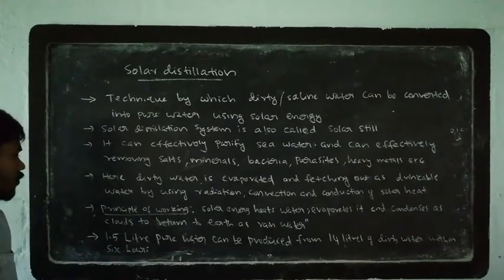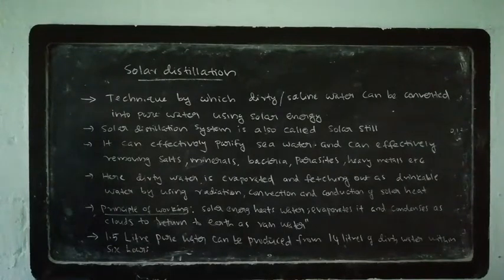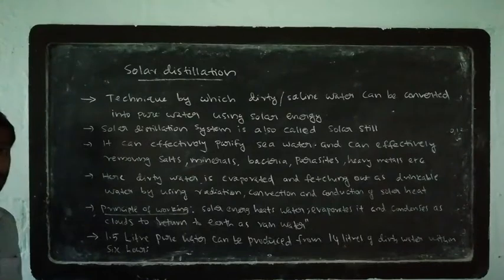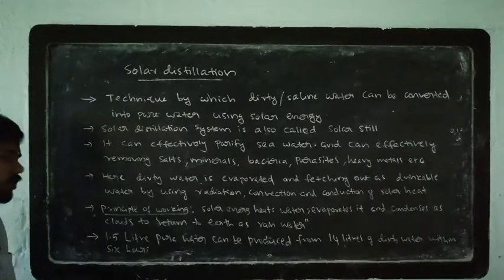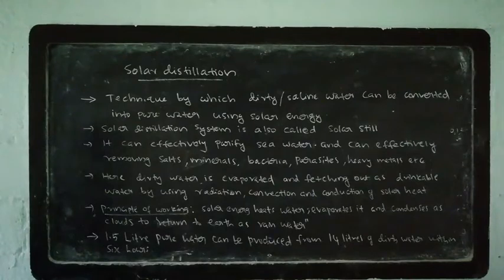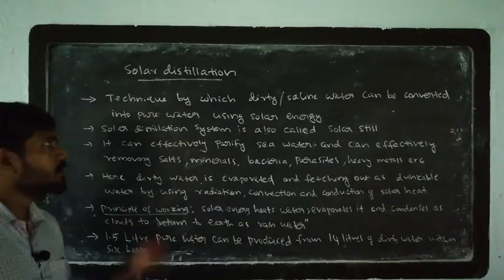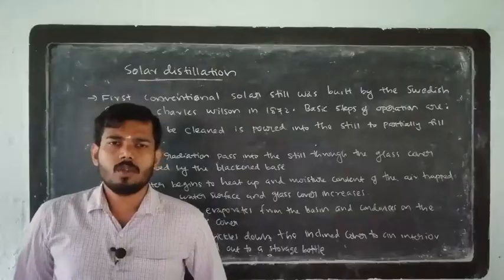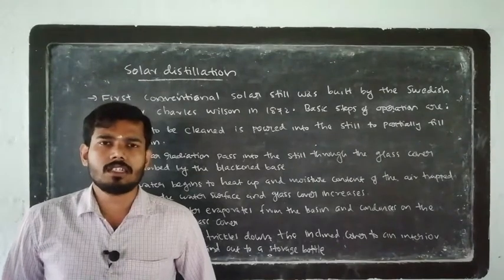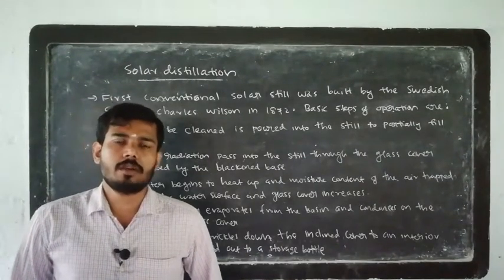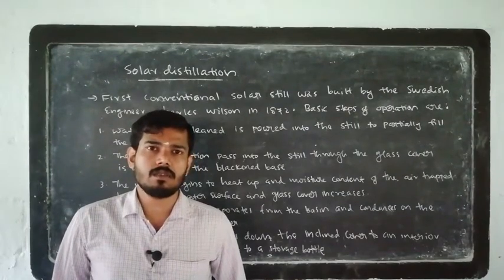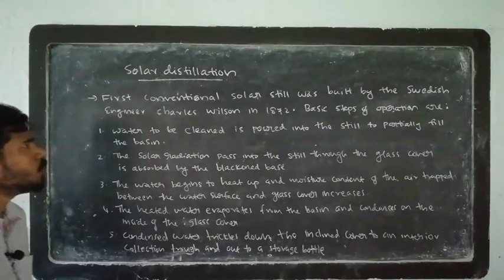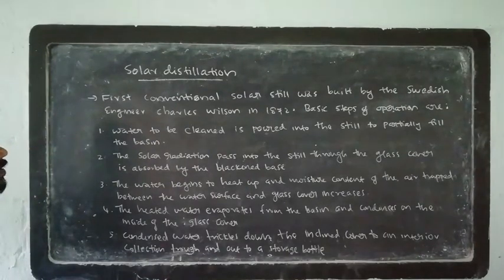You can see the output of solar distillation: 14 liters of dirty water produces 1.5 liters of pure water in 6 hours. The first conventional solar still was constructed by a Swedish engineer named Charles Wilson.